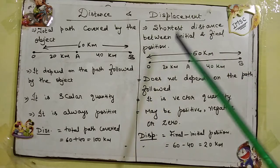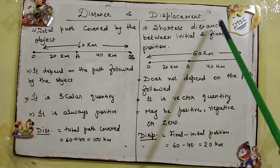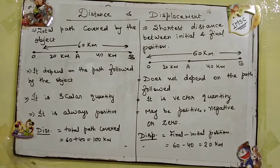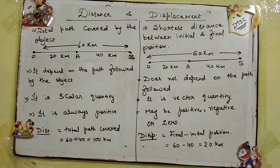What is displacement? Displacement is the shortest distance, or minimum distance, between the initial and final position. That is the minimum distance between the initial and final position of the object. Distance depends on the path followed by the object — different routes give different distances. But displacement remains the same regardless of which path is followed — it does not depend on the path taken.